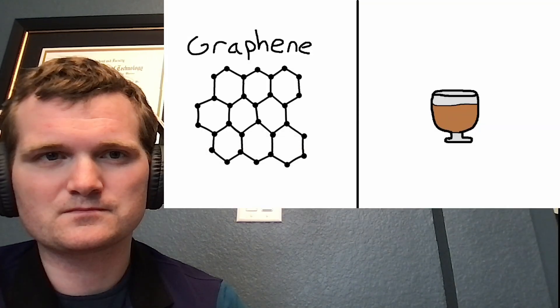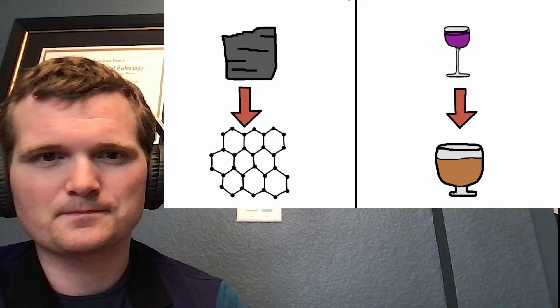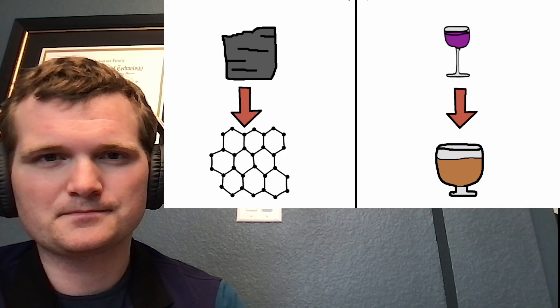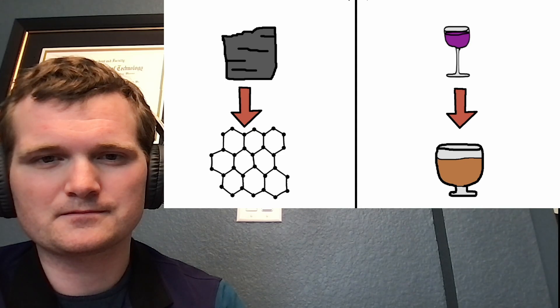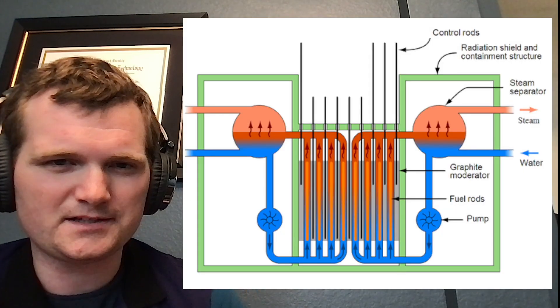Graphene is brandy. It's similar to graphite in structure, but it's put through a process to make it more pure. And as a result, it's much stronger. Graphene slash brandy.